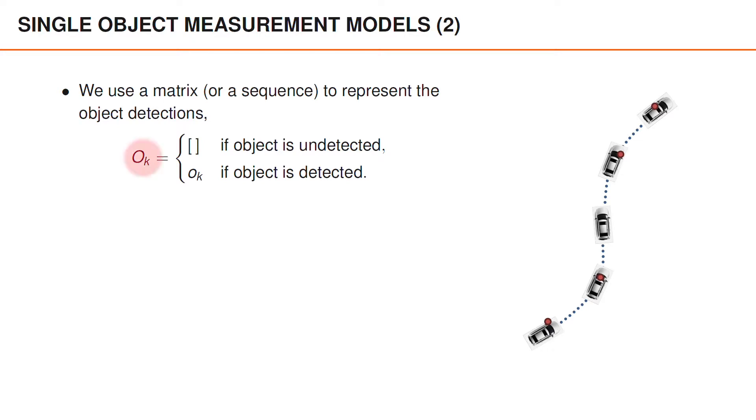It is useful to have a single variable that can represent both whether or not the object is detected, as well as the object measurement when it is detected. During the first part of this course, we use matrix notations to represent all measurements. If the object is detected, the matrix O_k is identical to the object measurement. If the object is not detected, we set O_k to this symbol representing the event that the matrix does not contain any measurement vectors, and we refer to this symbol as an empty matrix. We use vertical bars on both sides of the matrix to denote the number of column vectors in the matrix.